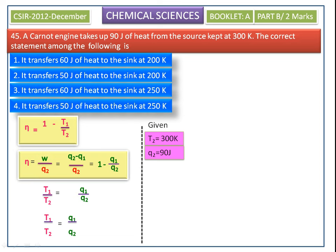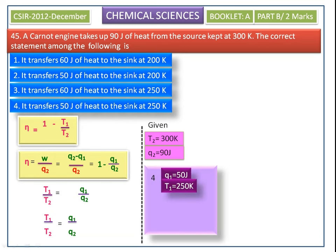We check the fourth option first, where Q1 = 50 J and T1 = 250 K. Substituting into T1/T2 = Q1/Q2, we get 250/300 = 5/6 for T1 by T2, and 50/90 = 5/9 for Q1 by Q2. Since 5/6 is not equal to 5/9, the fourth option is not the correct answer.